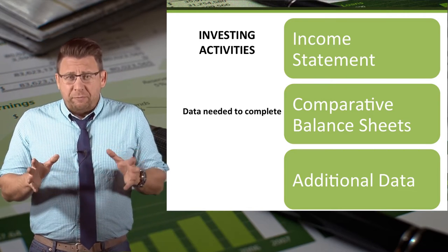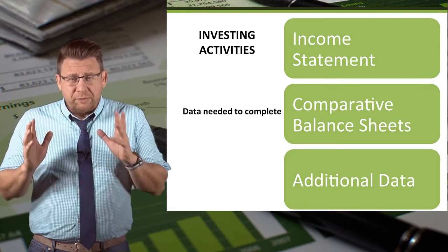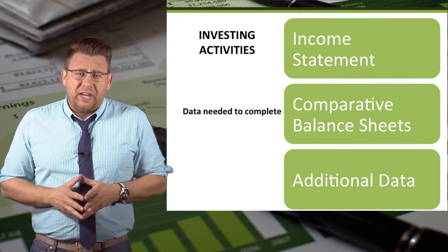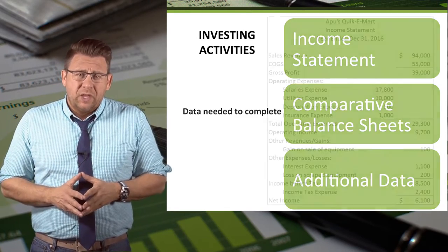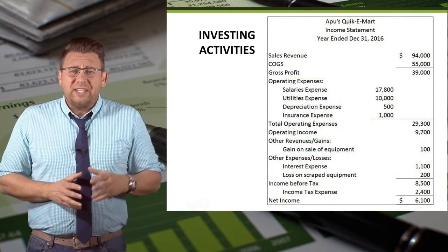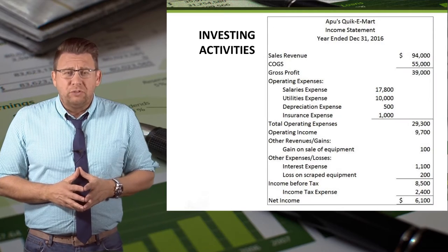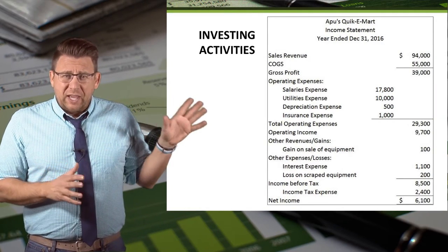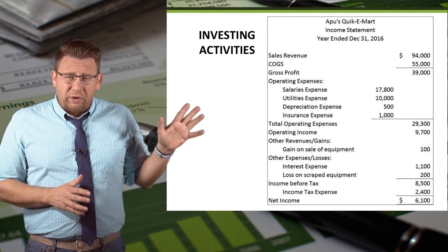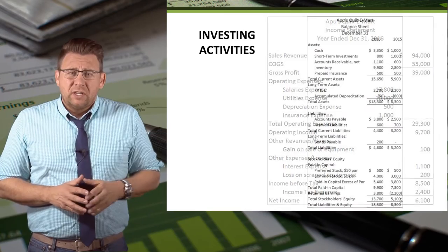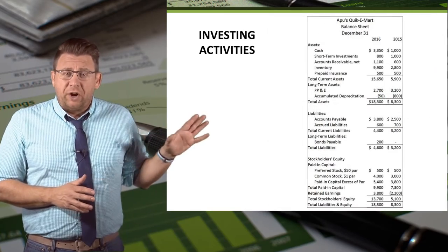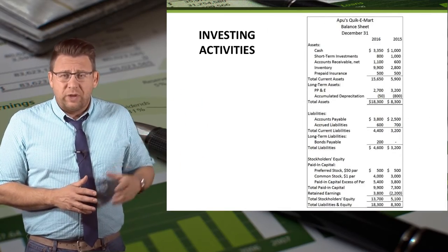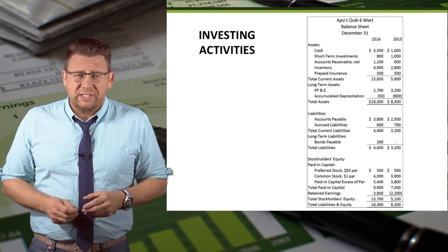A comparative balance sheet is just a balance sheet that compares two years of data. So let's use the example of Apu's Quickie Mart. Here is the income statement we will reference, and here's the comparative balance sheet showing the years 2015 and 2016.